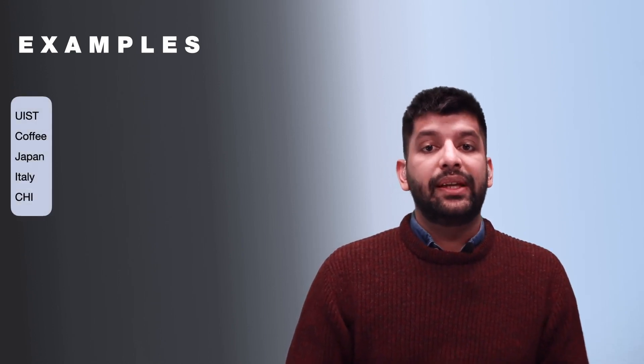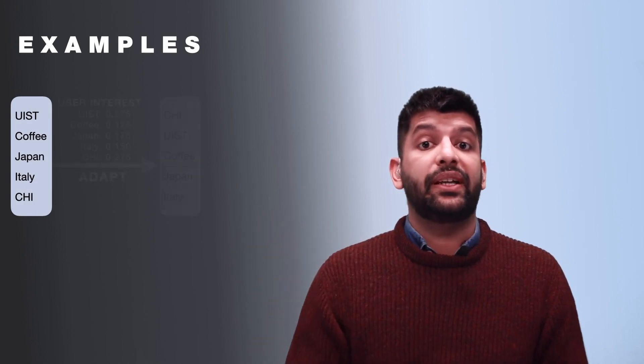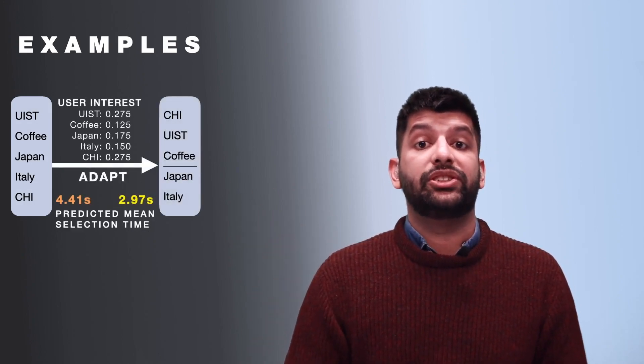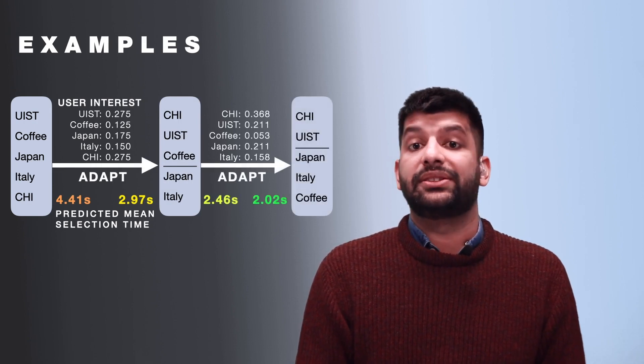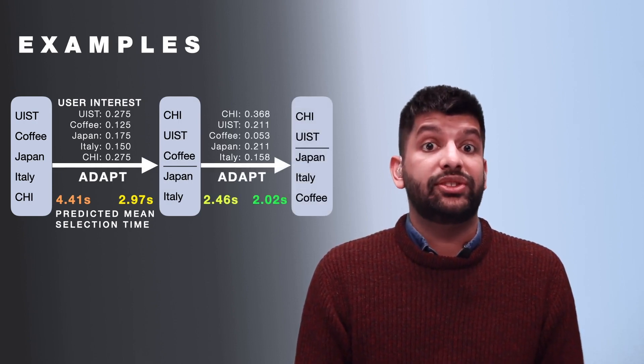To bring home the point, I'd like to show you a couple of examples of how our method adapts menus. In this simple case, the menu has five items that are adapted based on the user's changing interests. As you might notice, through sequential adaptations, the average selection time goes down drastically.